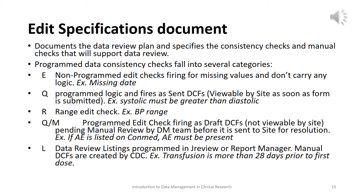The edit specifications document documents the data review plan and specifies consistency checks — both programmed edit checks and manual checks — that support data review. This exists in an Excel spreadsheet, making it easy to find specific information. We have a series of programmed edit checks that run on clinical data. The first category, 'E' checks, are non-programmed edit checks that fire for missing values without logical conditions — for example, a missing date such as the patient's date of birth or the date a study visit was conducted.